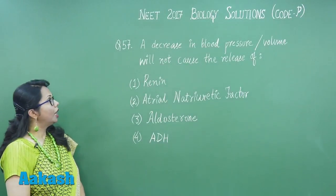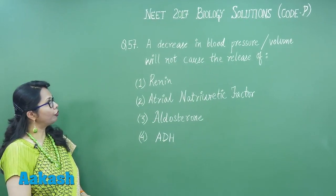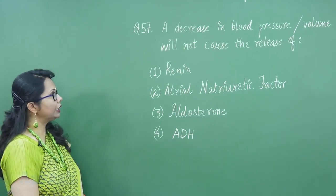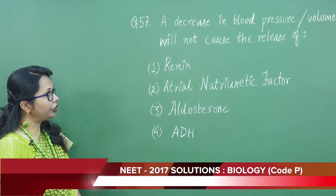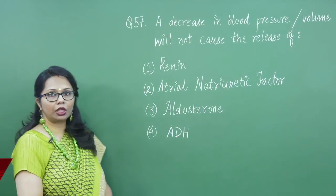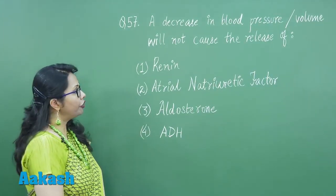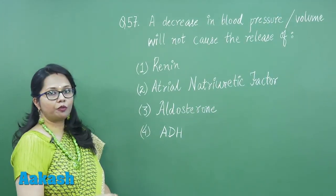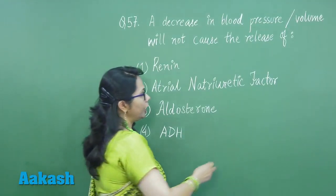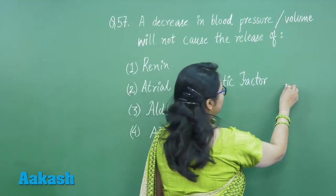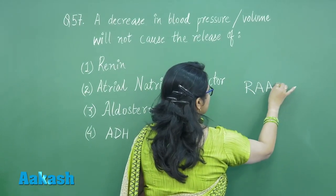Question 57. A decrease in the blood pressure or volume will not cause the release of — now, when the blood pressure decreases, that results in a decrease in the GFR as well, which is sensed by the macula densa, and in turn there is stimulation of the RAS system.